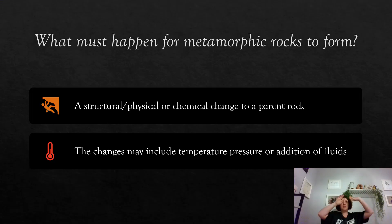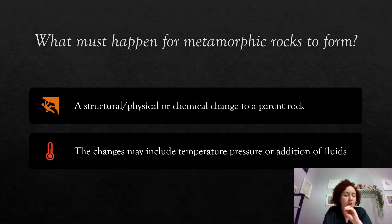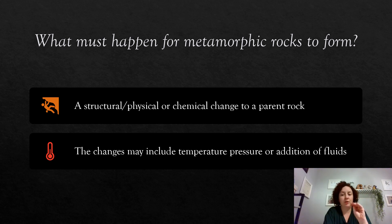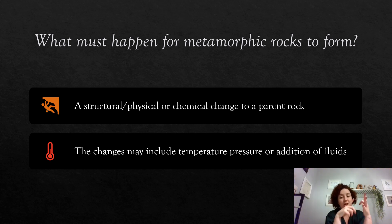So what must happen in order for a metamorphic rock to actually form? There needs to be a structural, physical, or chemical change to the parent rock. With sedimentary rocks, parent rocks break down into smaller pieces. But with metamorphic rocks, the parent rock stays whole. Instead, a large amount of heat, pressure, or additional fluids — typically water with different minerals — is forced upon these rocks. The changes may include temperature, pressure, and additional fluids.